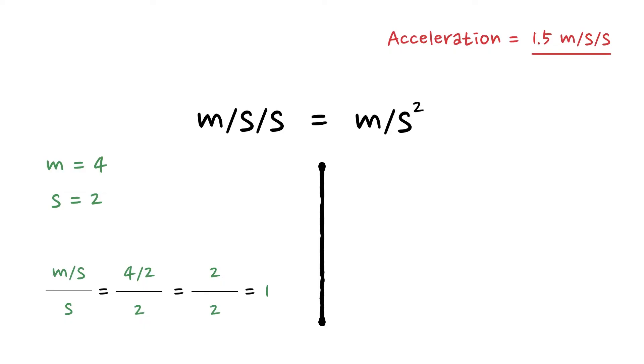If we do the same thing with meters per second squared, substitute M with 4 and S with 2, we'd end up with 4 divided by 2 squared, which is 4 divided by 4, which equals 1. So we're coming out with the same thing each time. Both of these sets of units are really just the same thing.